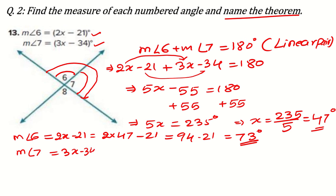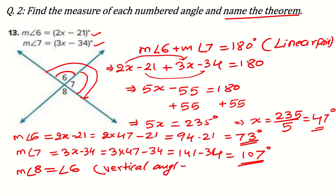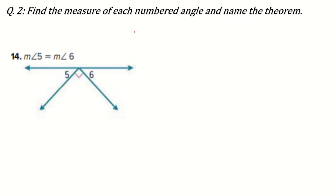The measure of angle 7 is 3x minus 34, which is 3 times 47 minus 34. That's 141 minus 34 equals 107 degrees. Now for angle 8: the measure of angle 8 equals the measure of angle 6 because they are vertical angles — face-to-face angles. Whatever name you've studied, use that. So angle 8 is also equal to 73 degrees.